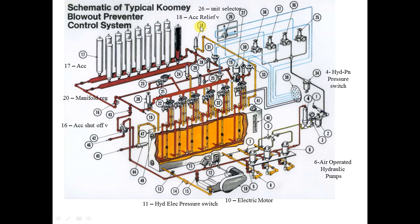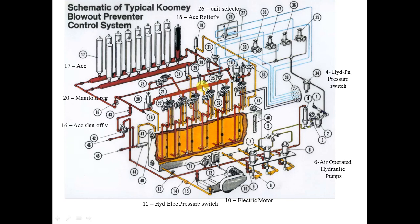Number nineteen is another strainer — same purpose as before — to remove impurities from oil going to the annular or manifold lines. Number twenty is called the Koomey pressure reducing and regulating valve, also called the manifold regulator. It reduces pressure from the accumulator value of 3000 psi down to 1500 psi for the manifold.